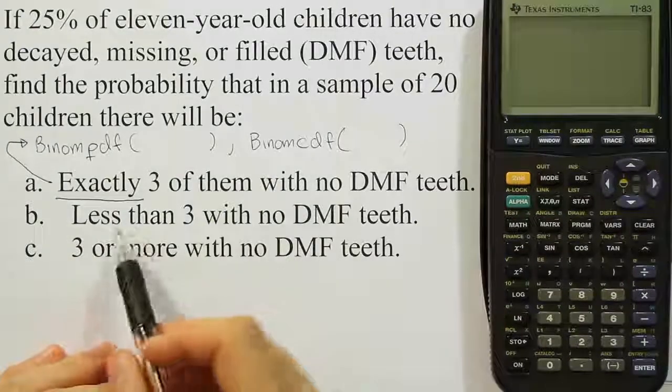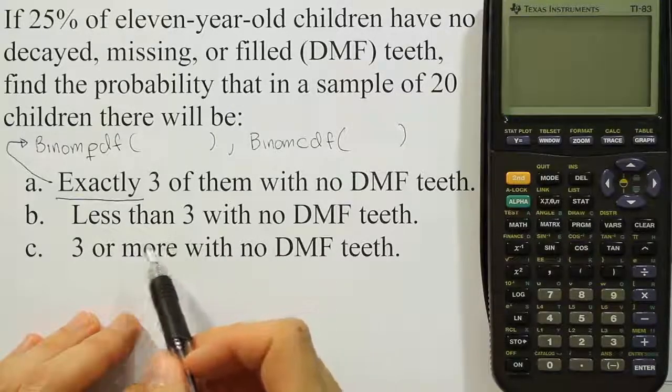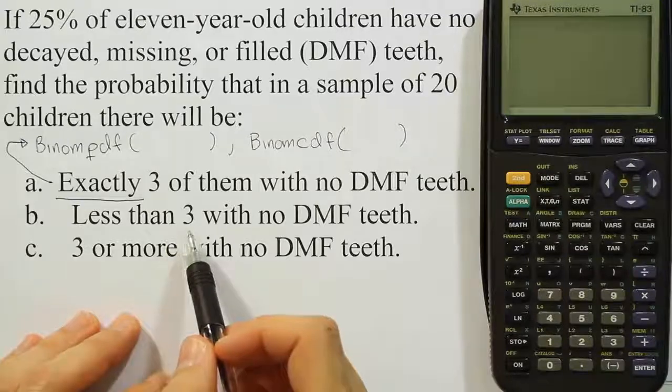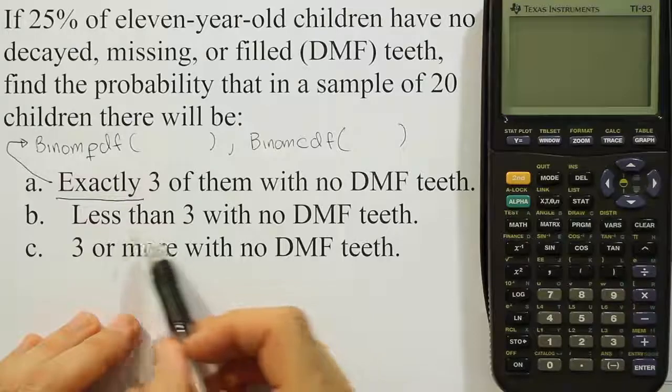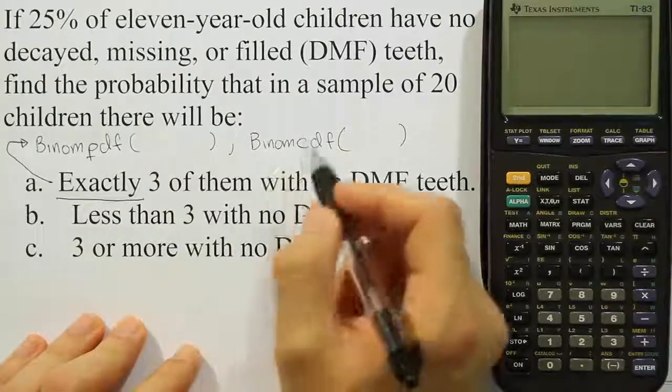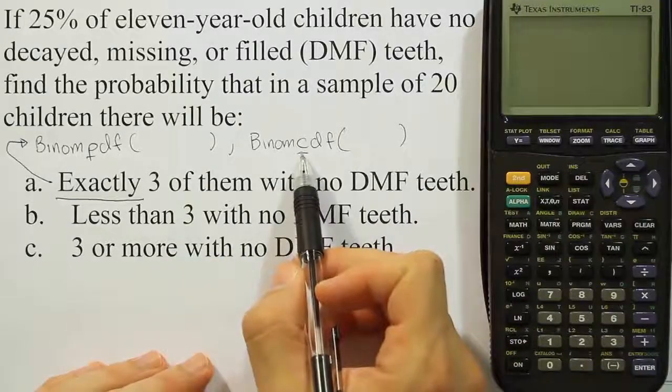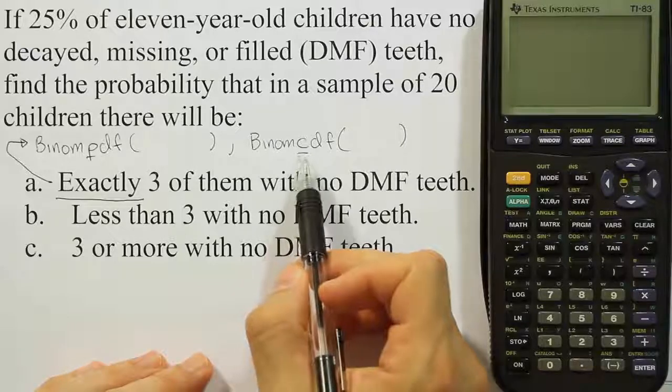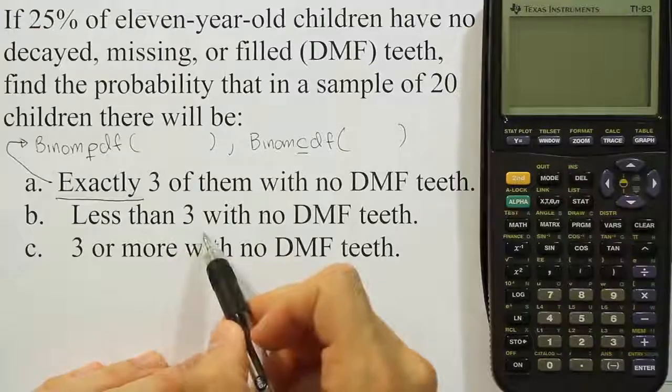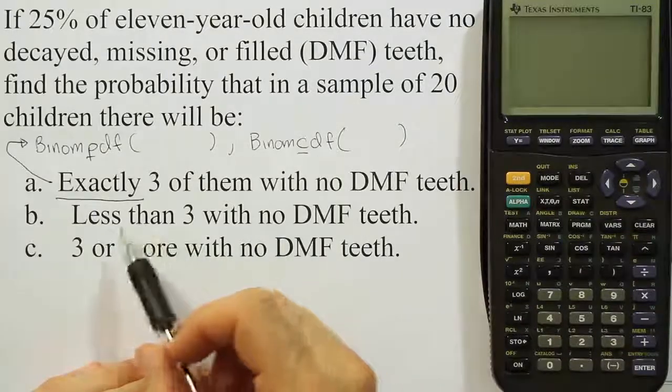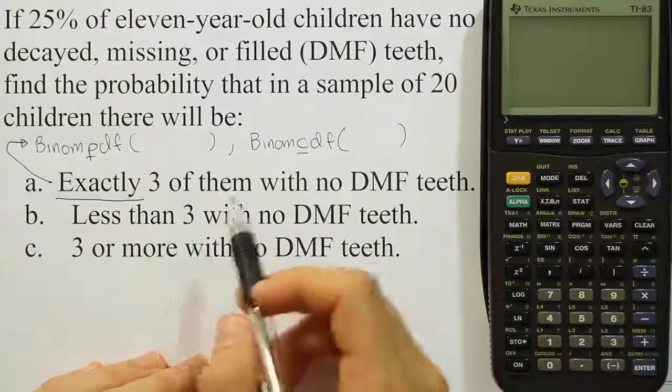Now if it says something like less than three, that's not exactly three. That could be two, one, or zero. Less than three, if we're talking about a discrete random variable, it can take on values that are two, one, or zero and still be less than three. So there's three different cases. For that we use the binomial CDF procedure in the calculator, CDF standing for cumulative density function. This CDF means we're going to accumulate probabilities, we're going to add together the three cases that make this true.